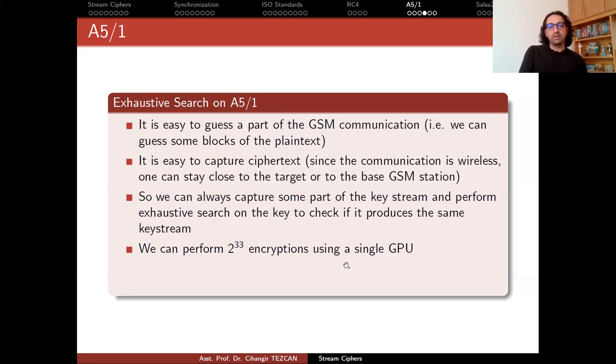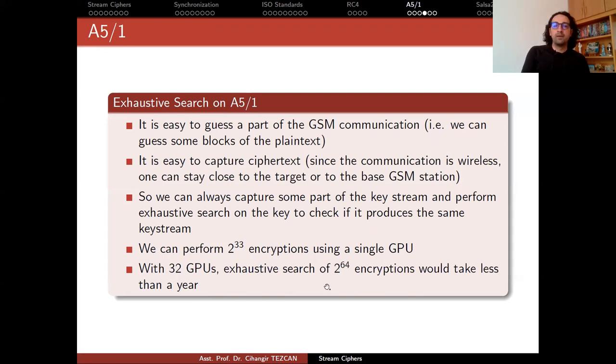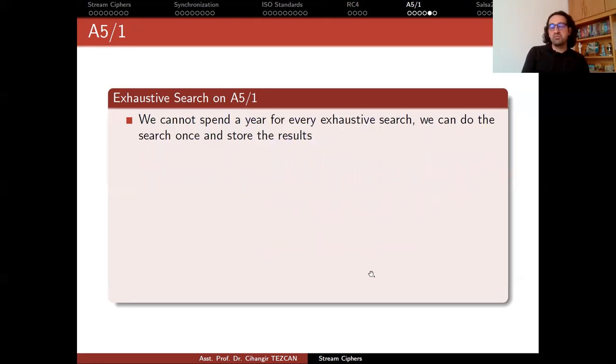We actually run experiments on our GPUs and we observed that in our best optimizations, we can perform 2 to the 33 encryptions using a single GPU. So with 22 GPUs, an exhaustive search of 2 to the 64 encryptions would take less than a year. Actually, you can reduce this number to a few months or actually to a few days if you have more GPUs. But assume that it takes a year for you to decrypt the communication. You cannot spend a year for every exhaustive search attack if you want to capture more communications.